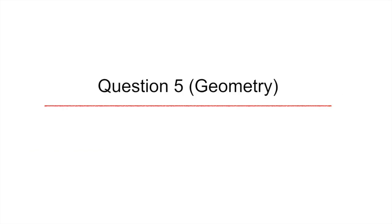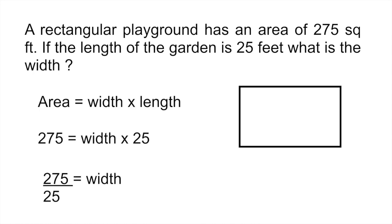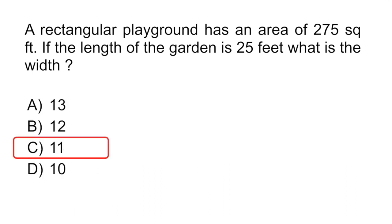Our last question today is a geometry problem and they're telling us that a rectangular playground has an area of 275 square feet. If the length of the garden is 25 feet what is the width? Usually most formulas especially for geometry are provided for you but just make sure you have an idea of where they are, what they mean. When we look at the area of a rectangle the area is equal to the width multiplied by the length. Here they give us the area which is 275 and they give us the length which is 25 and so you just plug those numbers in and then you would solve for the width which gives you a total of 11.